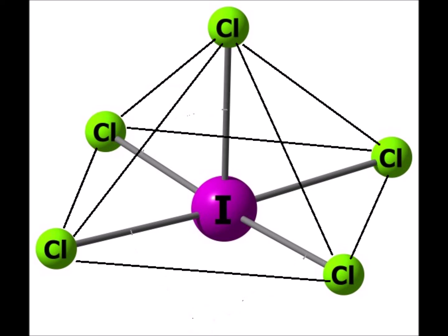Six electron domains, one of which is a lone pair, gives us the square pyramidal shape shown on the screen. It is like octahedral if one of the positions is replaced by a lone pair. Because the central iodine atom is surrounded by six electron domains, it is therefore d2sp3 hybridized: two d's plus one s plus three p's gives us six, which equals the number of electron domains around the central iodine atom.